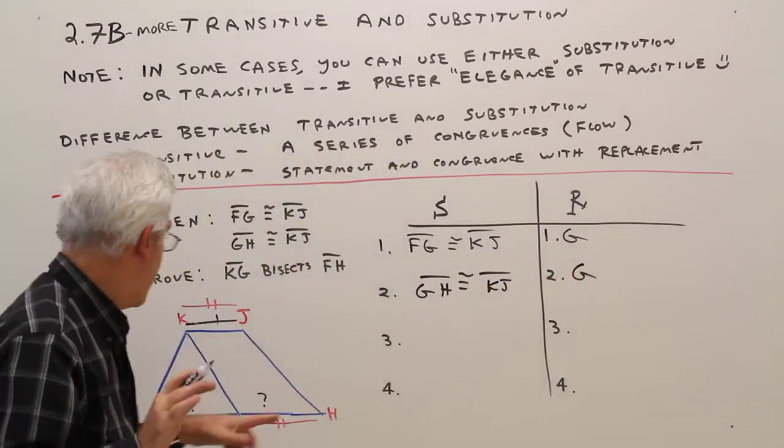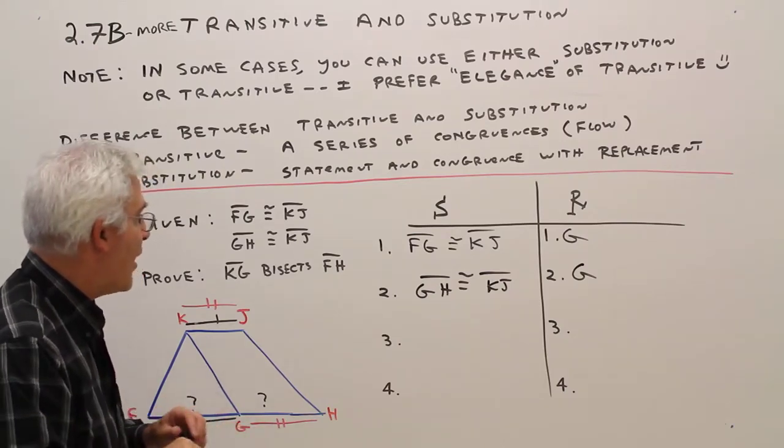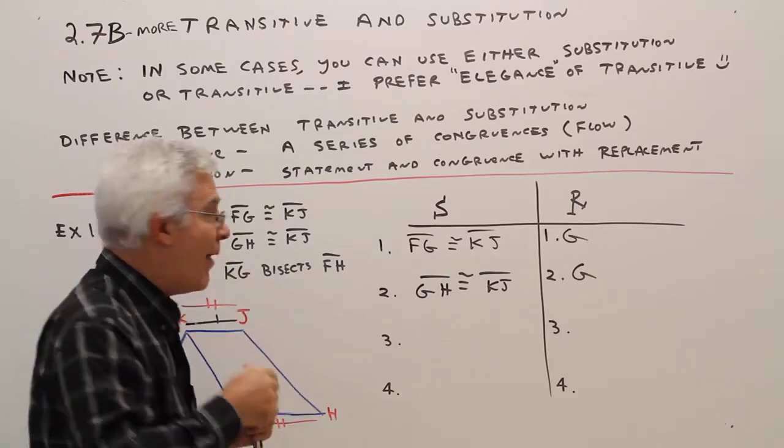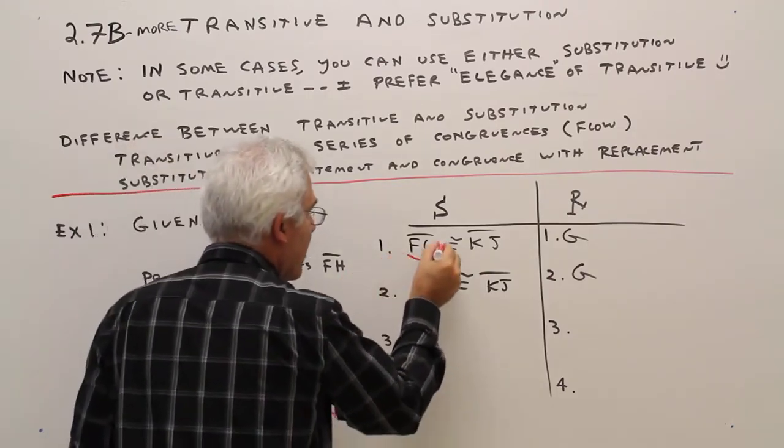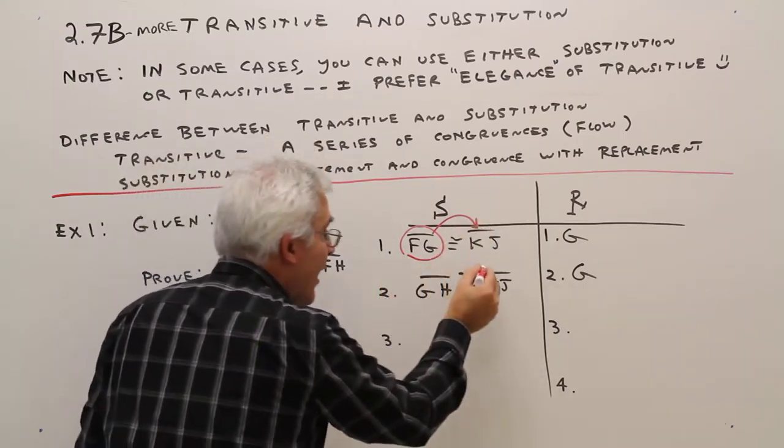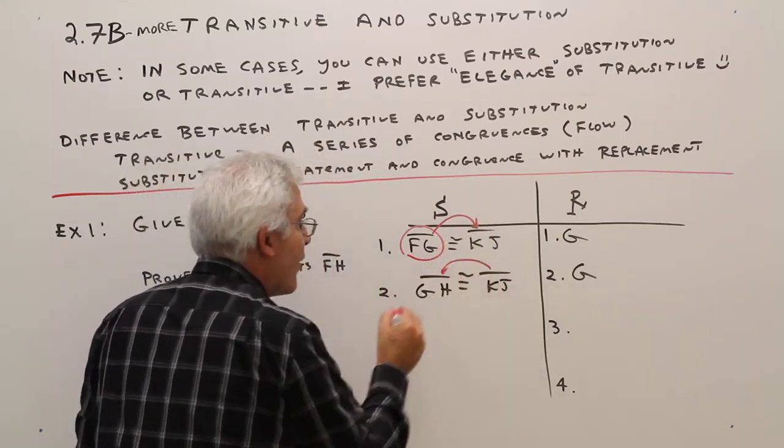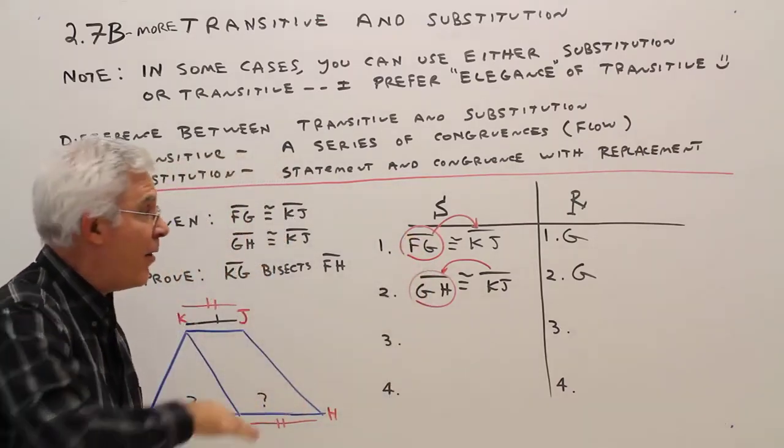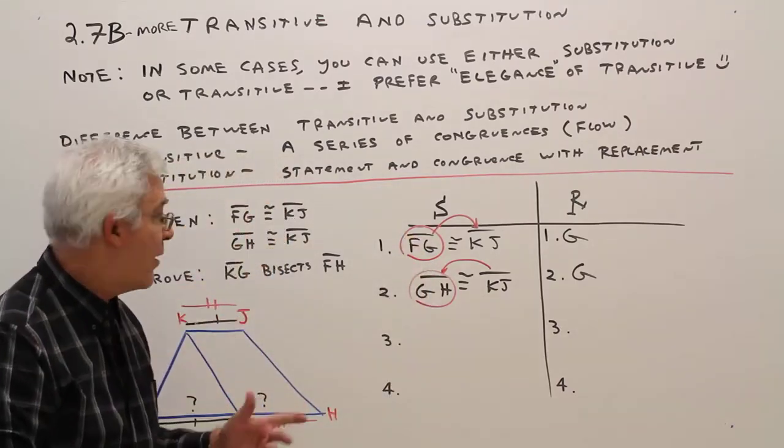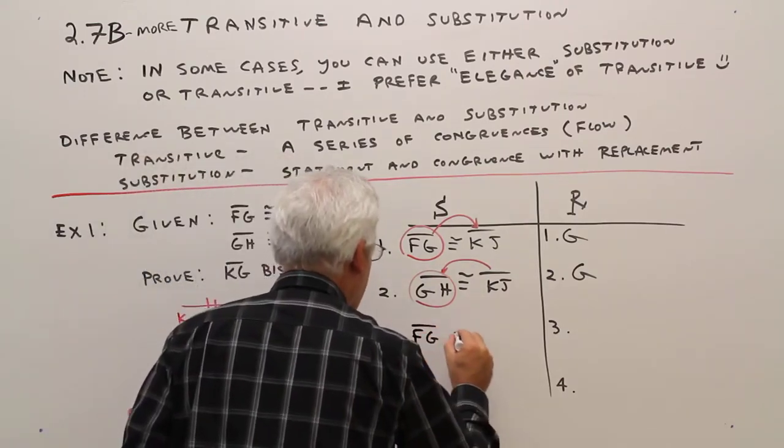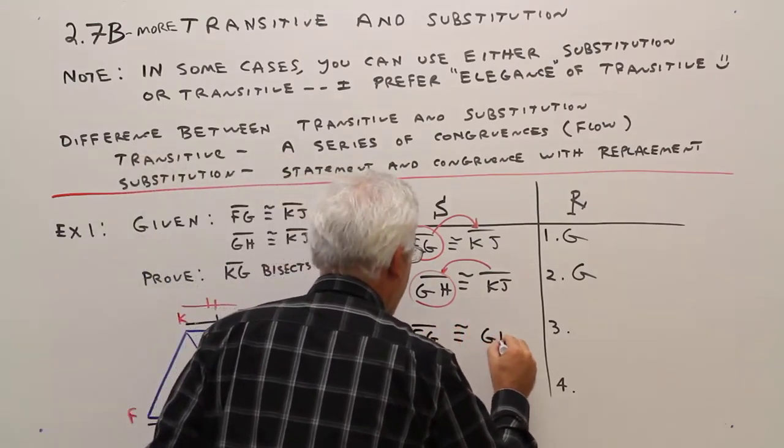Right there, again I'm trying to get FG and GH, watch how I can do it. I like to use arrows in my proof. FG is going to KJ, and then KJ is congruent to GH. So I started there and I ended there. That's my congruence flow path. So I'm going to say segment FG is congruent to segment GH.